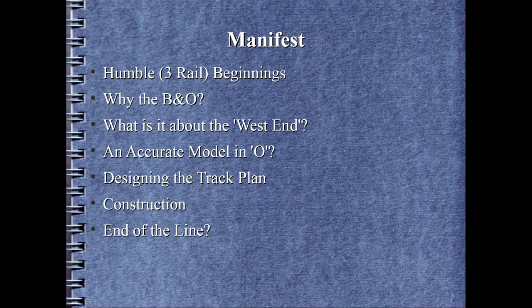What are we going to discuss today? First, I'll give some background on how I came to model in 2-Rail O scale. Then, I'll speak to how I decided on the B&O and the West End in particular. The most important theme of this clinic: can you accurately model a specific railroad, time, place and traffic patterns in 2-Rail O scale without scratch building everything? How I designed a track plan to fit my basement and the models to represent that prototype comes next. Finally, and sadly, is this the end of the line for my railroad?